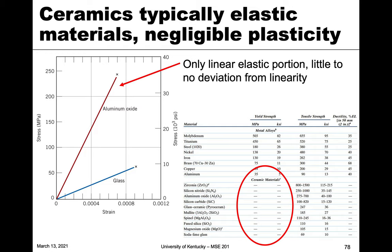There's no plastic deformation, so you don't see a yield strength — you just see tensile strength, which is basically the maximum stress on the curve, which is the fracture strength. The stress-strain curves are very simple: mostly just linear elastic up to the point of fracture, and then they break.